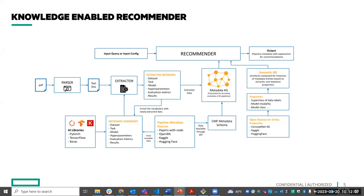For the natural language query — for example, 'I want the list of pipelines for image classification using a convolutional neural network because I don't want to use transformers' — these queries are transformed into a simple JSON format or key-value pairs given to the recommender. The output is a list of pipelines with explanation. The two core components of the recommender are the metadata knowledge graph and the semantic knowledge graph.